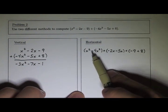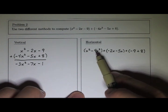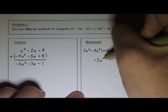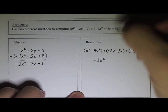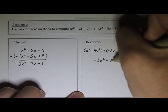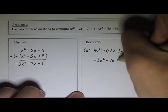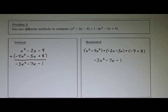x squared minus 4x squared—that's really 1x squared minus 4x squared—1 minus 4 is negative 3x squared. Then negative 2 plus negative 5 is negative 7x. Finally, negative 9 plus 8 is negative 1. You can see we get the same thing using either method.